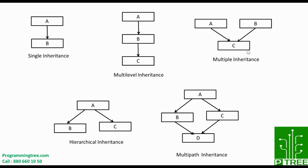In multiple inheritance, derived class C is derived from multiple base classes A and B, that's why it is called multiple inheritance. In hierarchical inheritance, a single base class has multiple derived classes.